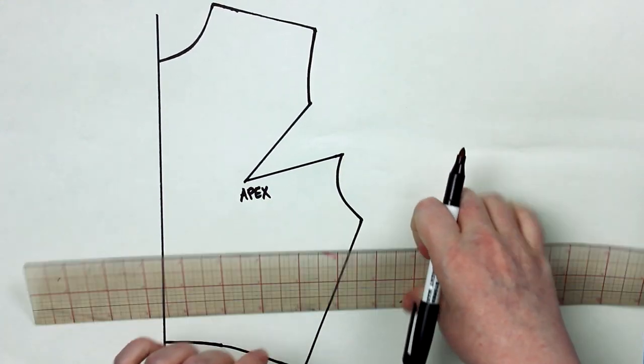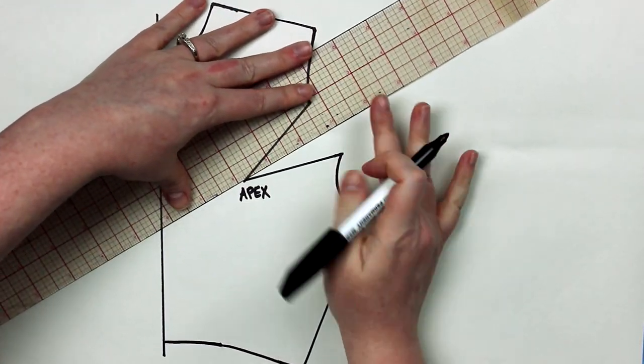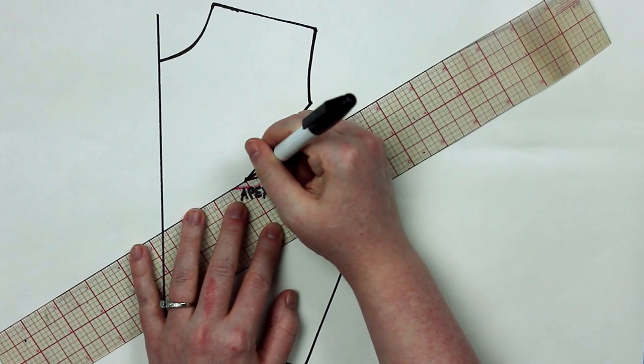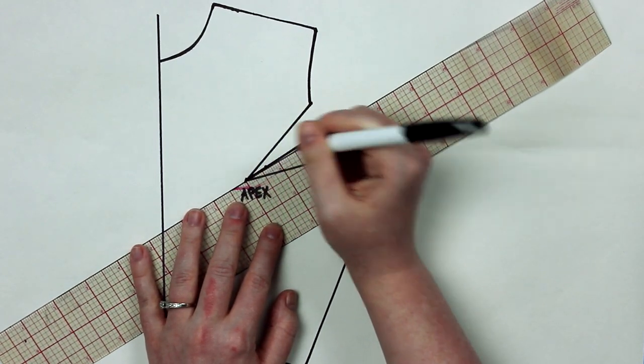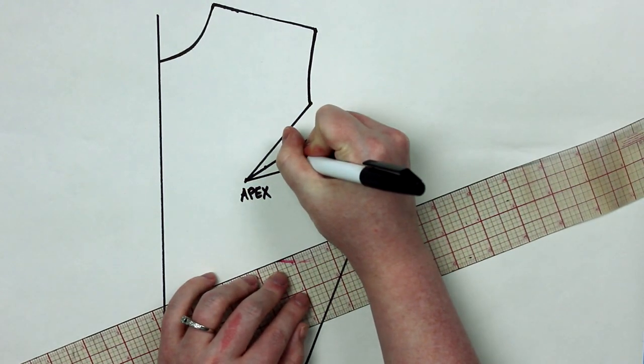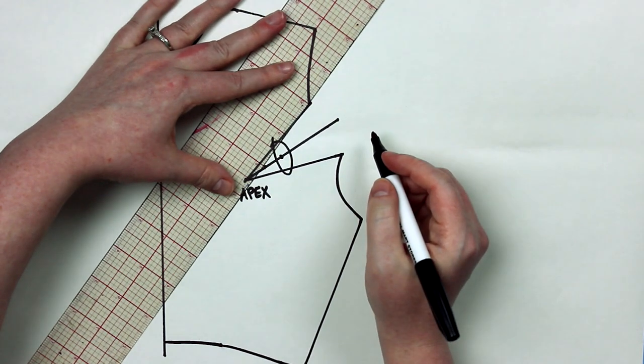Just like our last method, we're going to want to draw a line down the center of our opening. Following that line, we're going to draw on our new dart tip, which is going to be approximately five-eighths of an inch away from our apex, though it can vary depending on your personal preference. Then draw on our punch hole half an inch down from that.